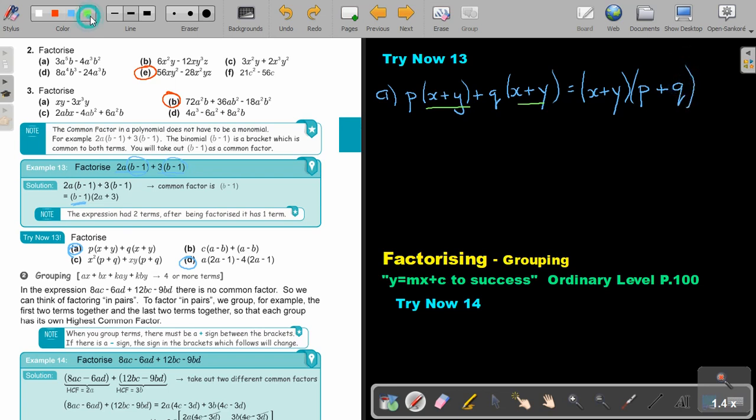And then the last one is going to be number D. So, if I'm having A(2A minus 1) minus 4(2A minus 1). So, the same here. Do you see the brackets? They are exactly the same. So, take it out. And if I divide, what is left? A. And if I divide, what is left? Negative 4. And again, that's my final answer. In the next video, we will look at grouping.